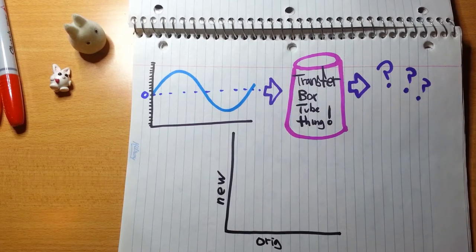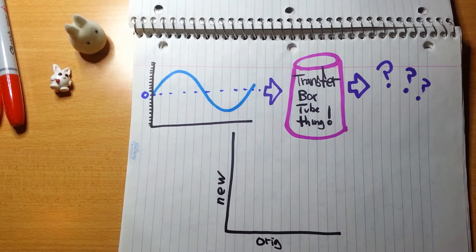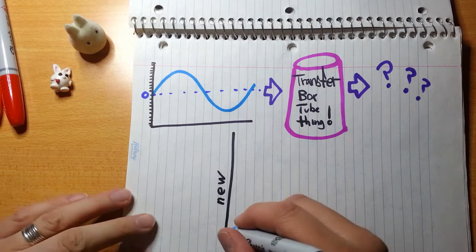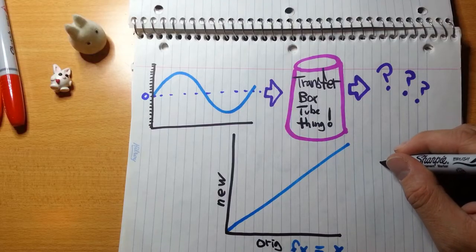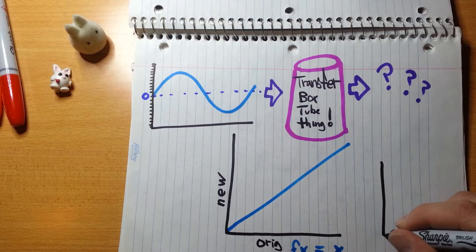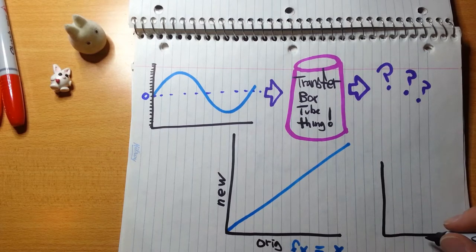So yeah, it is going to get a little mathy, but just a little. Anyway, so if we have a graph that looks like this, and we take a line like this, so that every x equals every y, then we have something called the identity function. Every input is exactly the same as every output. No surprises here.